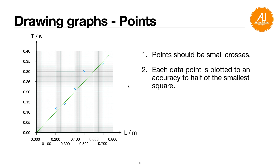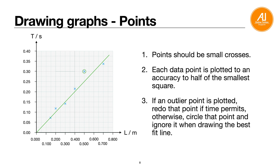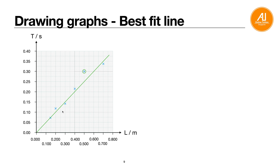If there is an outlier — a point that is too far from all the other points and the best-fit line — if you have time you should redo that data point by repeating the experiment. If there's no time, circle the outlier and when drawing the best-fit line just ignore it — draw the line through the other points as if it doesn't exist.